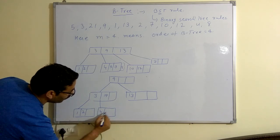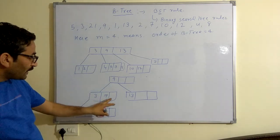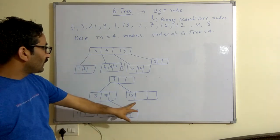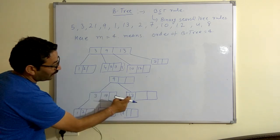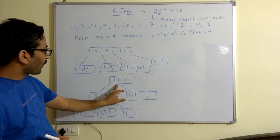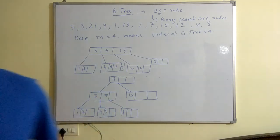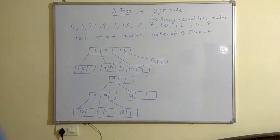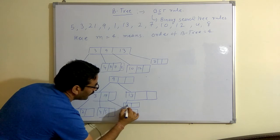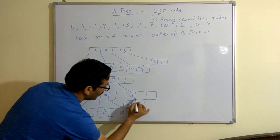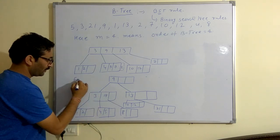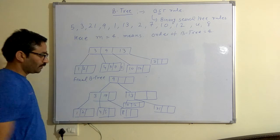Values 4, 5, 8. Next values: 13, 9, 13, 9, 13. After 13 is equal to 10 and 12. After 13 is 21. And this is your final B3 tree. Thank you very much.